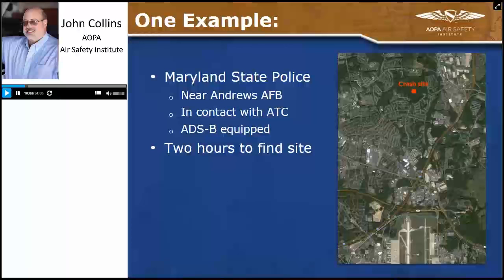You need to give yourself every opportunity to be visible and give search and rescue other clues so that you can be found. As an example, here in Maryland a state police helicopter went down near Andrews Air Force Base a few years ago. They were in contact with air traffic control and equipped with ADS-B. However, when they went down, it took people two hours to figure out where they were — even in a heavily populated area with poor weather. It's an interesting example of how things can go wrong even when you think you're not in the wilderness.